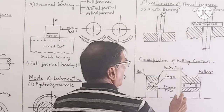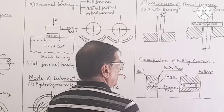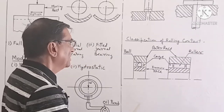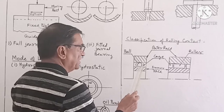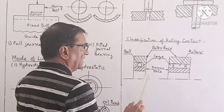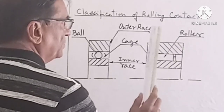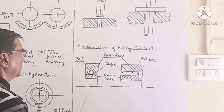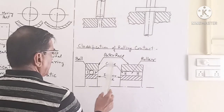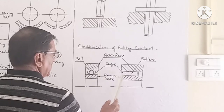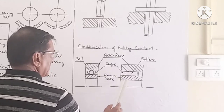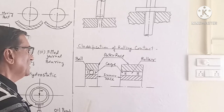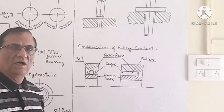Classification of rolling contact bearing on the basis of rolling element: here, a ball is used as the rolling element, and here, a roller is used as the rolling element. This is the outer race, this is the cage, and this is the inner race. A hole is provided for the insertion of the shaft.